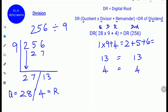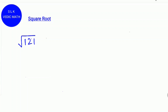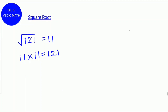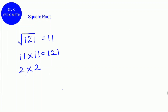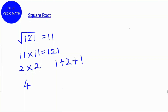Now we are going to verify our answer for square root using digital roots. The square root of 121 is 11, which is nothing but 11 times 11 equals 121. Find the digital root of 11: 1 plus 1 is 2. And find the digital root of another 11, which is also 2. Next, find the digital root of 121: 1 plus 2 plus 1. 2 times 2 is 4, and 1 plus 2 is 3, and 3 plus 1 is also 4. They are the same, so the answer is correct.